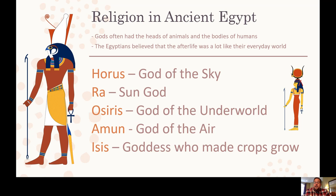In Egypt, gods often had the heads of animals and the bodies of humans. The Egyptians believed that the afterlife was really a lot like the everyday world. Some of the major gods they worshipped include Horus, the god of the sky; Ra, the sun god; Osiris, the god of the underworld; Amon, the god of the air; and Isis, the goddess who made all the crops grow. Depending on what their need was, they would pray to the different gods.